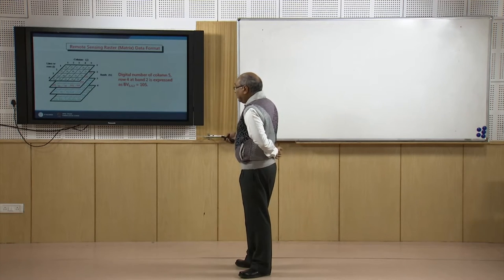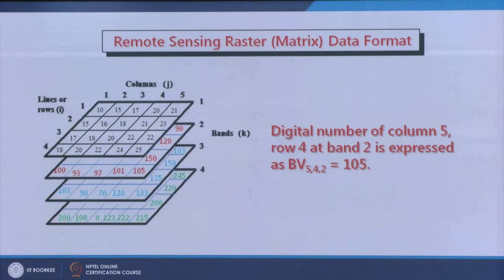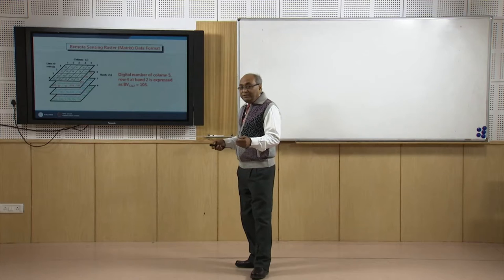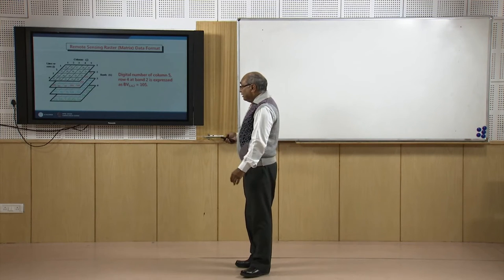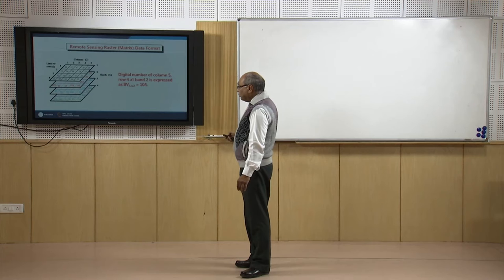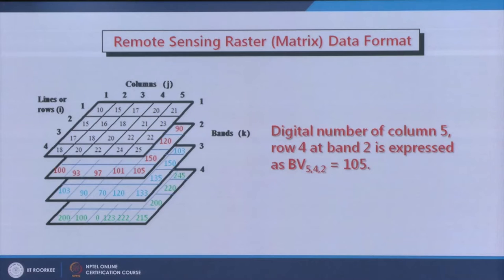Each pixel has an integer value. If I have more bands, say bands k, then I may have different pixel values depending on which part of the wavelength these bands represent. For example, in a schematic showing green, blue, red, and black bands — 4 bands together are shown here just as a schematic.